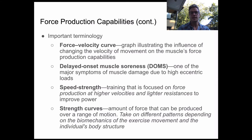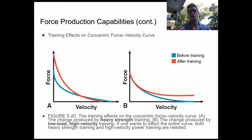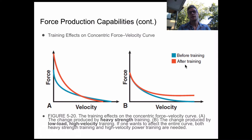Whereas if we just train at high volumes, we'll produce a lot of force, but we don't get that same velocity. Another way of saying this is that the force we produce with our muscles is trained at that certain speed or velocity. Looking at graph A, we see force increasing on the y-axis and velocity increasing in the positive direction on the x-axis.